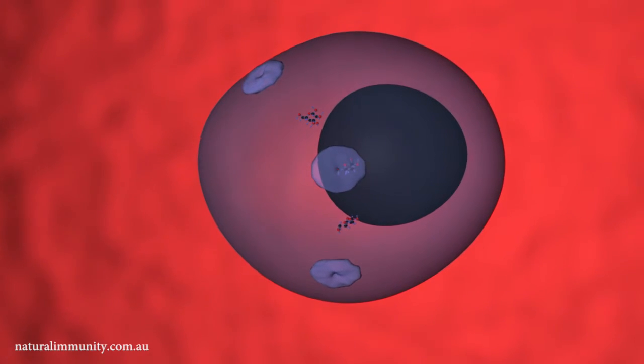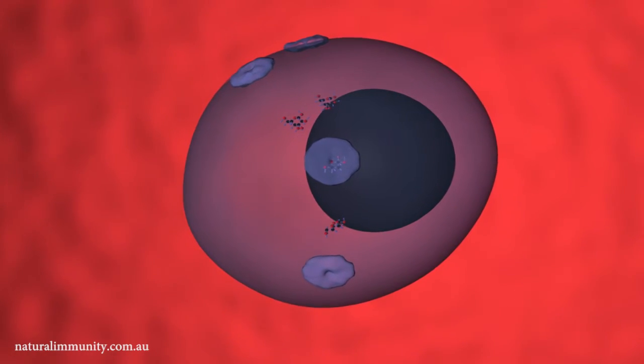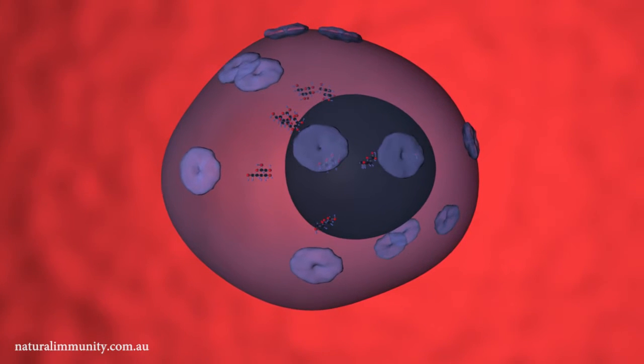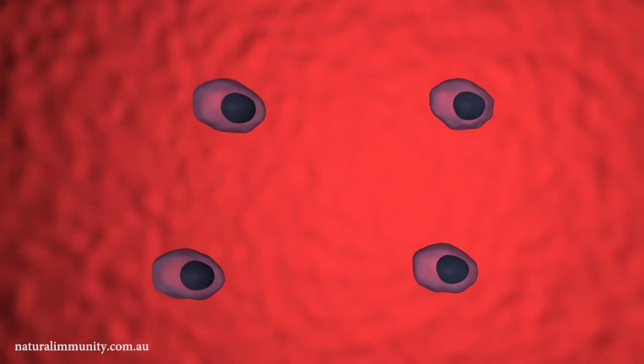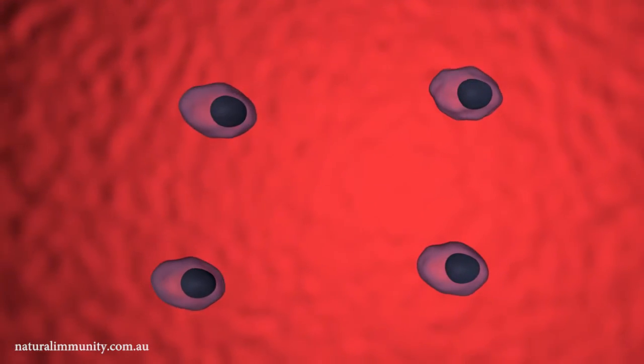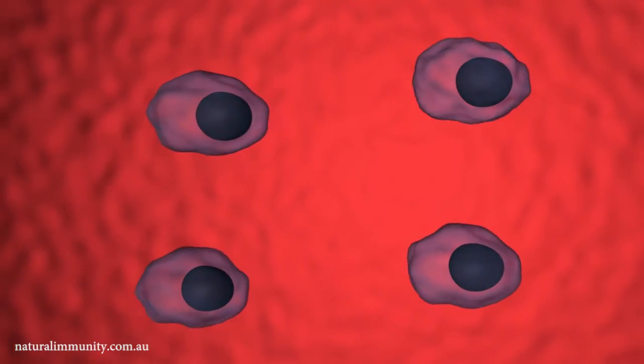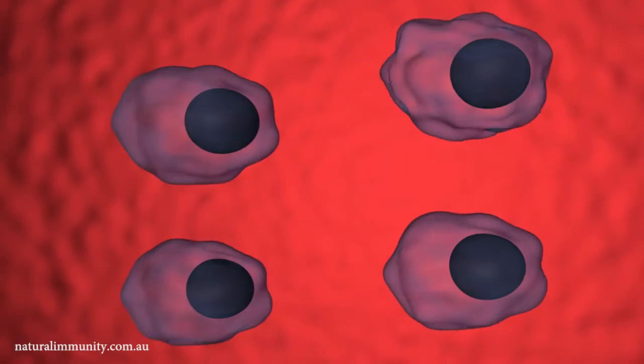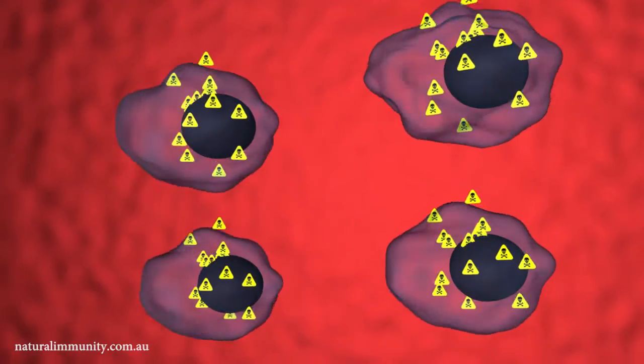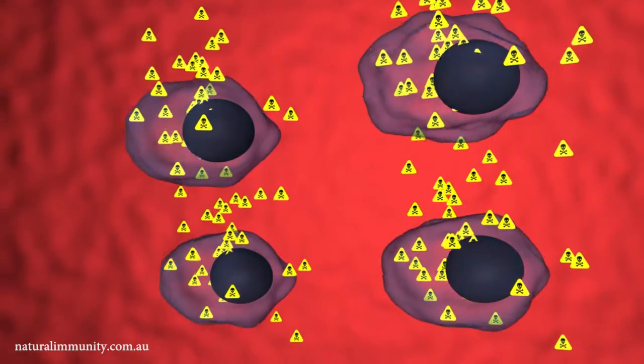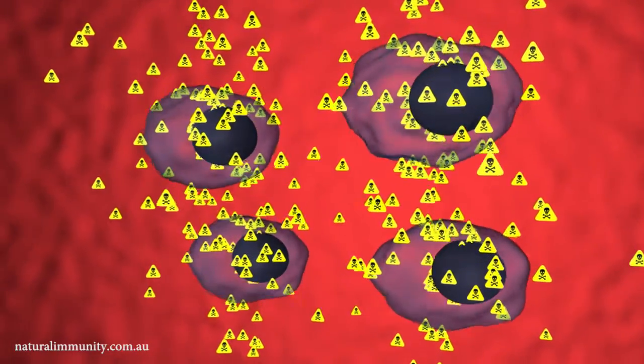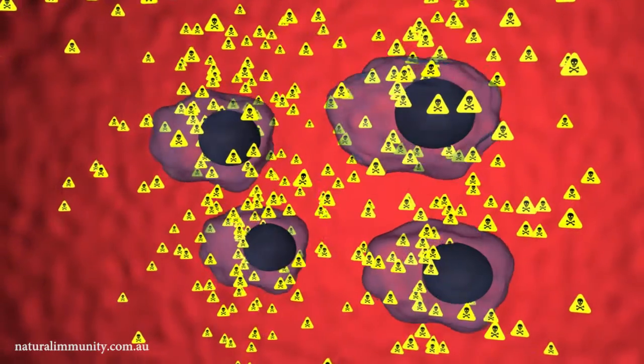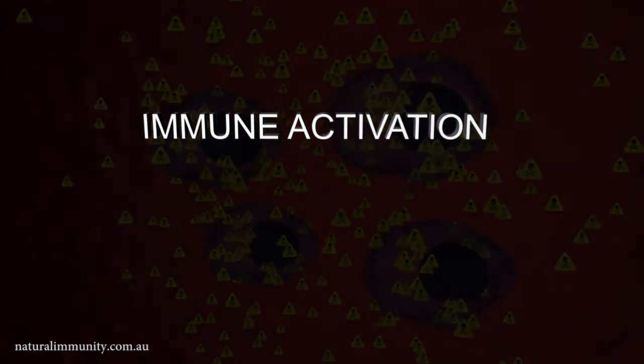and that this causes more glucose to enter the cells. This is a survival mechanism because the CD4 T-Cells need more energy to divide and manufacture antiviral and inflammatory molecules to fight the infection. This is what is called CD4 T-Cell activation or immune activation.